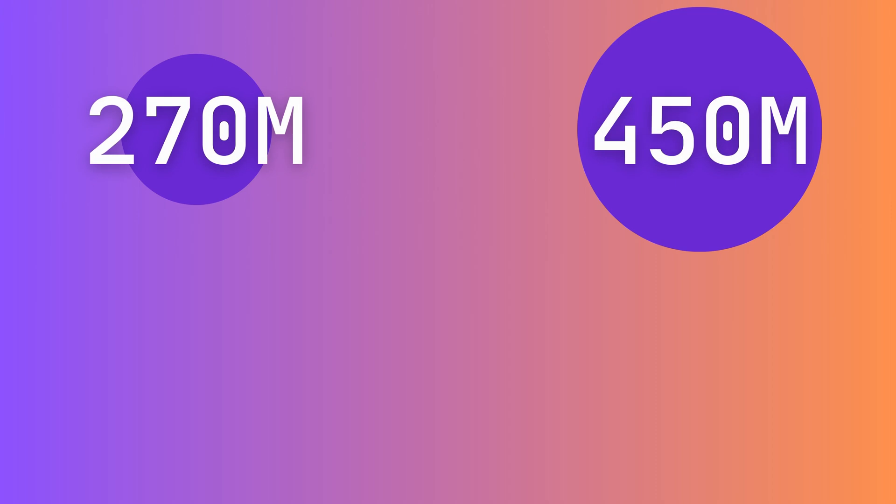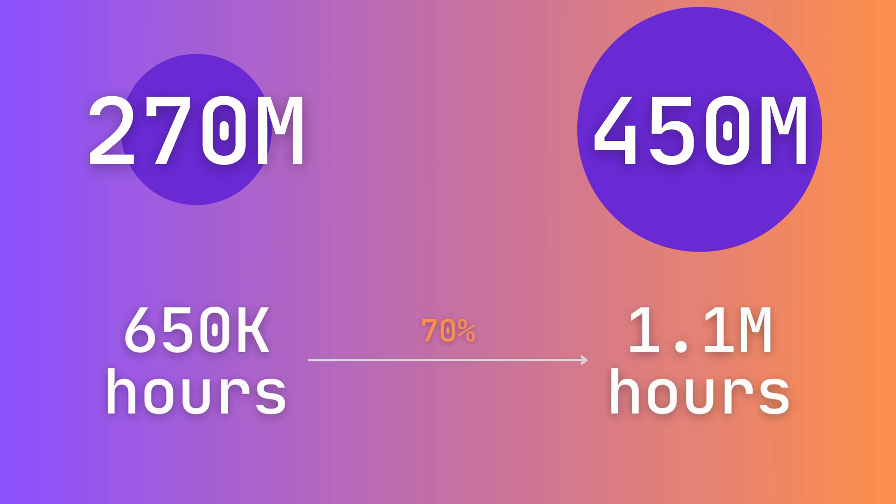Continuing the thread of research from Conformer 1, we increased the size of our model and the amount of data it was trained on. The model size is expanded from 270 million to 450 million parameters, and following the scaling laws presented in the Chinchilla paper, Conformer 2 is trained on 1.1 million hours of data.